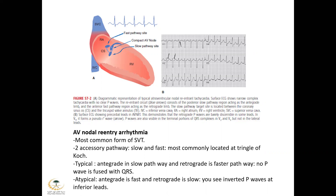We have two types of AV nodal reentry arrhythmias. In the typical form, the antegrade goes through the slow pathway and the retrograde through the fast pathway. In this case, you see no P-waves — just a fast rhythm with no P-waves, because the P-waves fuse with the QRS. In the atypical form, it is the reverse — the antegrade accessory pathway is the fast and the retrograde is the slow. In this case, you will find inverted P-waves in the inferior leads.